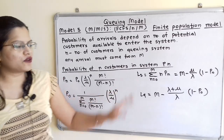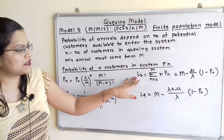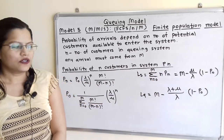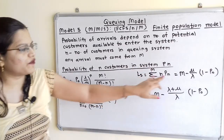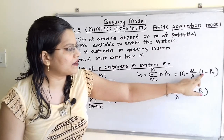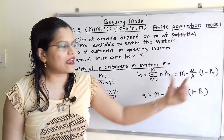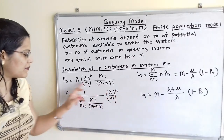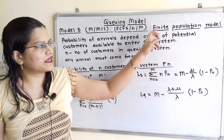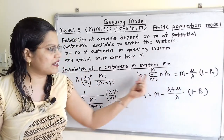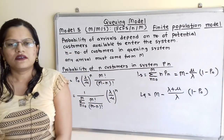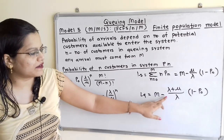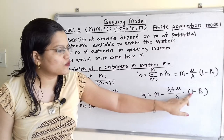The length of the system Ls equals the summation from N=0 to M, or more simply: Ls = M minus (mu/lambda) multiplied by (1 minus P0). This is easier to compute since P0 can be calculated from the previous formula and M is given in the question. The length of the queue Lq = M minus [(lambda + mu)/lambda] multiplied by (1 minus P0).